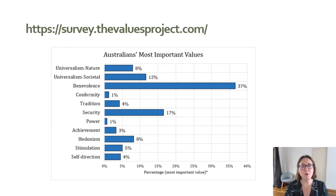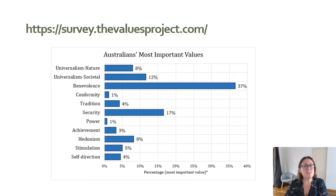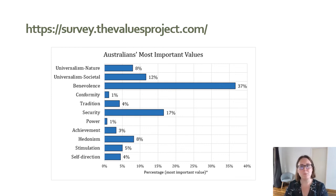You may be wondering what your personal values are and how they map onto this. You can check by filling in this survey, which is research specifically being done in Australia on personal values of Australians. From this research, it's been found that some values predominate at the personal level: coming out at the very top is benevolence, followed by security and universalism at both the social and natural level, as well as hedonism. I strongly suggest you fill this out and reflect on your personal values in relationship to the national values that influence what is considered normal or acceptable within our society.